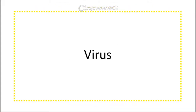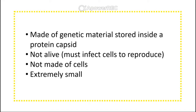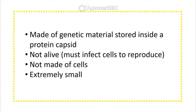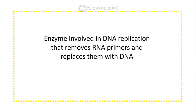The first term is virus. Viruses are made of genetic material — this could be RNA or DNA, single-stranded or double-stranded. They are not considered living. They have to infect a cell in order to reproduce and carry out metabolism. They are not made of cells and they are extremely small.